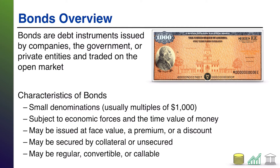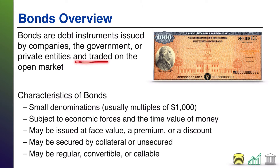Now, bonds can be issued by companies, but they can also be issued by the government or private entities. And what makes these bonds so special, especially relative to other forms of debt like a promissory note or note payable, is that they are traded on the open market.